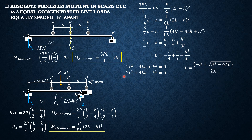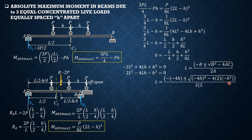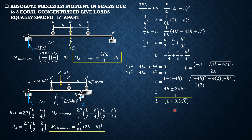Using the quadratic formula with A=2, B=−4H, C=−H², the threshold beam length is: L = [4H ± √(16H² + 8H²)] / 4 = [4H ± √(24H²)] / 4 = [4H ± 2√6·H] / 4. Since the minus sign gives a negative value, we use plus: L = (1 + 0.5√6) × H.